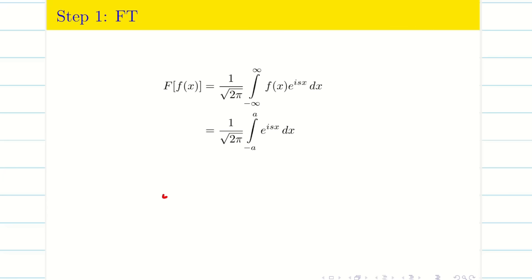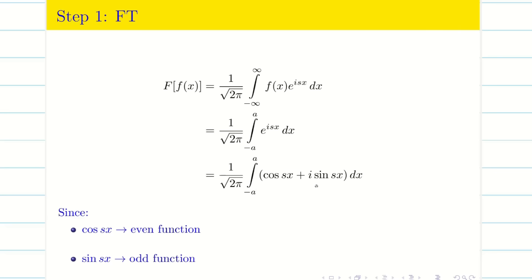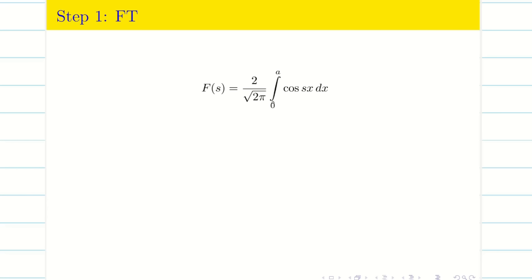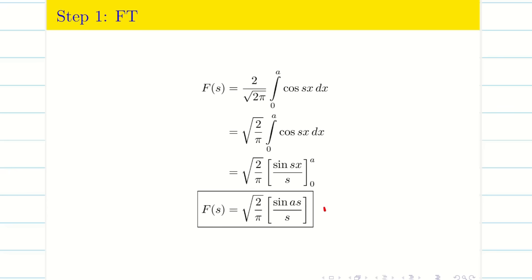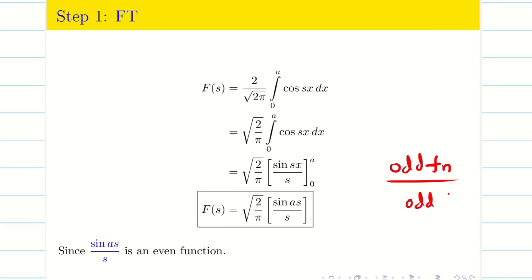Instead of integrating directly, substitute e^(isx) = cos(sx) + i sin(sx). Since cos(sx) is an even function and sin(sx) is an odd function, the sine term integrates to zero over −a to a. For the cosine term, using the even-function property: 2 × integral from 0 to a of cos(sx) dx. This simplifies to √(2/π) × [sin(sx)/s] from 0 to a. Therefore, F(s) = √(2/π) × sin(as)/s, which is an even function since sin(as) is odd and s is odd — odd over odd is even.